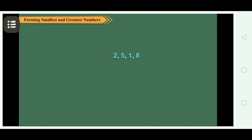Here you may repeat the digits. The greatest number is 8,85,521. Note that here we have repeated the greatest digits.